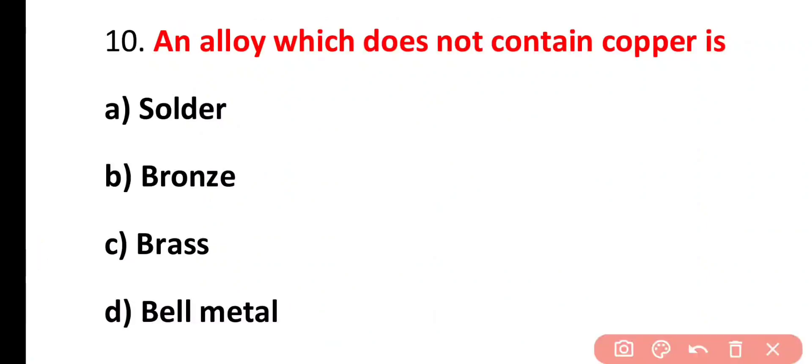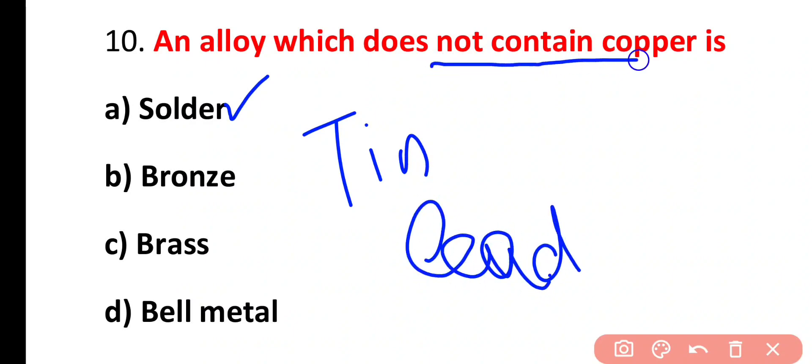Question number 10. An alloy which does not contain copper is solder, bronze, brass, bell metal. Correct answer is option A. Solder is alloy of tin as well as lead. It does not contain copper.